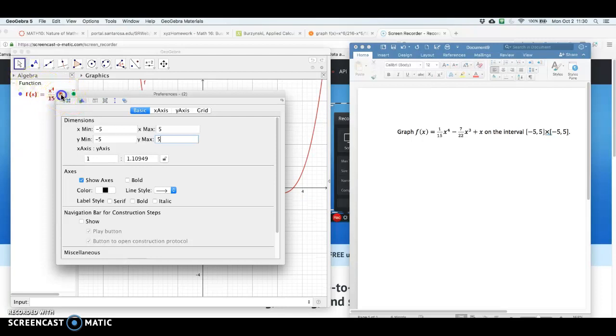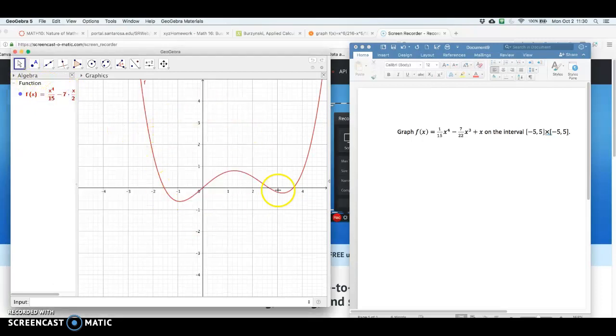Click on enter, exit out of here, and then see we have the graph going from minus 5 to 5 and minus 5 to 5.